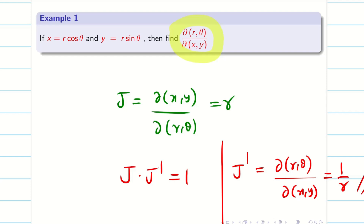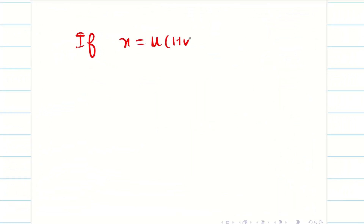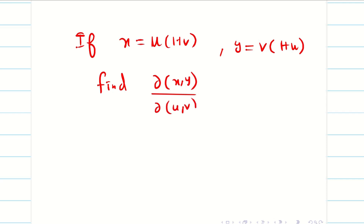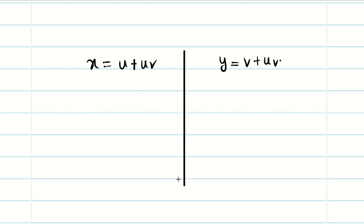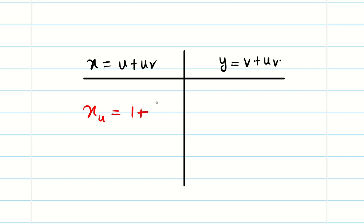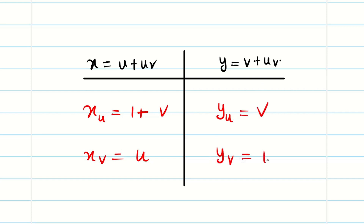Next problem: if x = u(1+v) and y = v(1+u), find ∂(x,y)/∂(u,v). Expanding: x = u + uv and y = v + uv. Making the table of partial derivatives: x_u = 1 + v, x_v = u, y_u = v, y_v = 1 + u.